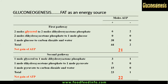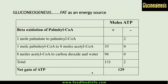For fat metabolism, there are also two pathways: the first yields 21 moles of ATP, where two moles of glycerol are converted into glucose and then through the TCA cycle; the second yields 22 moles, where glycerol is converted into dihydroxyacetone phosphate, which is then converted into pyruvate entering the TCA cycle. An example of beta-oxidation of palmitic acid (palmitoylate) yields 129 moles of ATP.